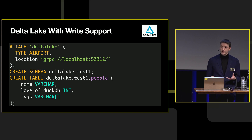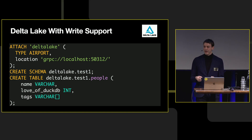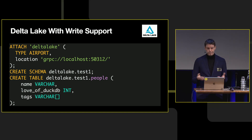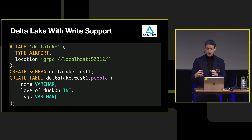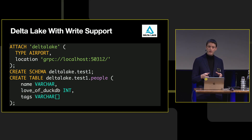We have an ATTACH call that basically says, hey, I want to talk to a flight server at this gRPC URL. We're attaching it as a database name called Delta Lake. Then you just go in and you can do CREATE SCHEMA and CREATE TABLE. And that's all the magic you need to know as a SQL user of DuckDB. There are other details, but we're keeping it at the high-level SQL level today.